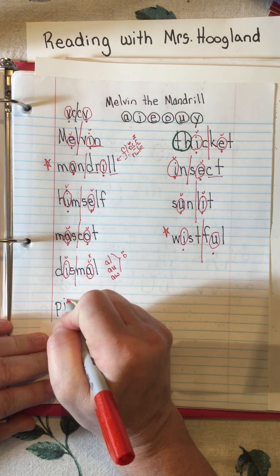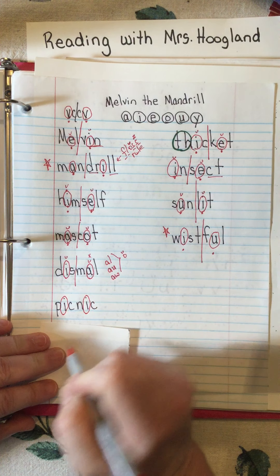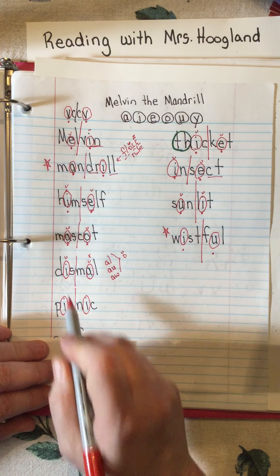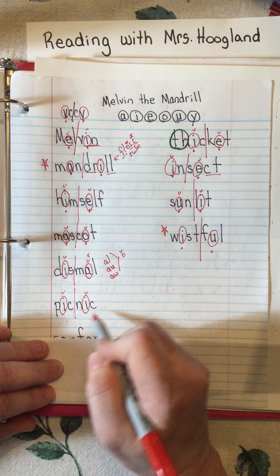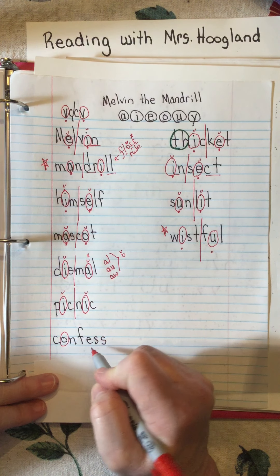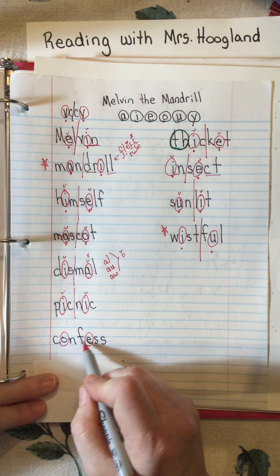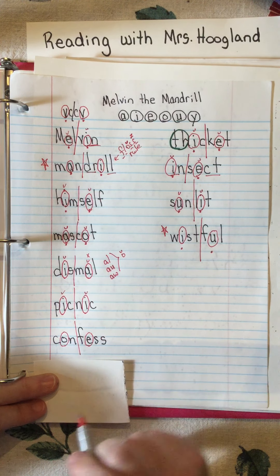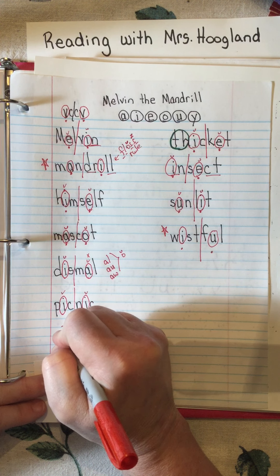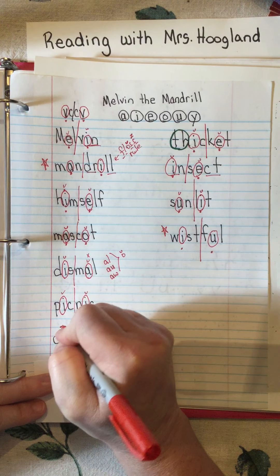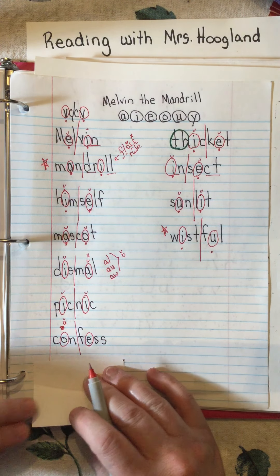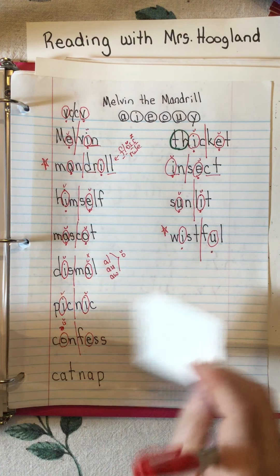Next word: a vowel, another vowel, two consonants in the middle - split it: 'pic-nic.' Picnic! The next one also has a vowel, another vowel, and two consonants in the middle - split it: 'con-fess.' Actually, the O is making the schwa sound - the schwa symbol means it makes the short U sound. Confess - have you ever had to confess to something before?